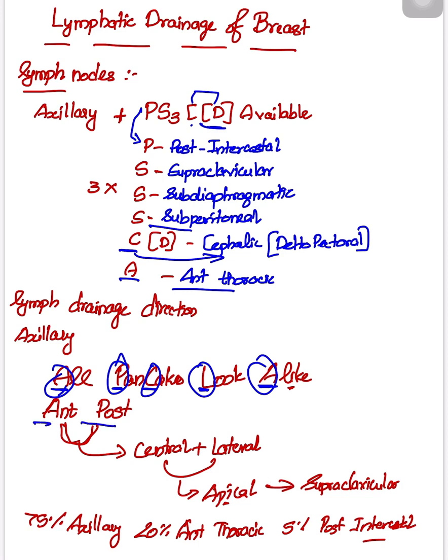anterior and posterior. First, the drainage goes into the anterior and posterior groups. From there, it goes to C and L—central and lateral groups. From central and lateral, it goes to another A, which is apical. From apical, it lastly drains into supraclavicular. This is